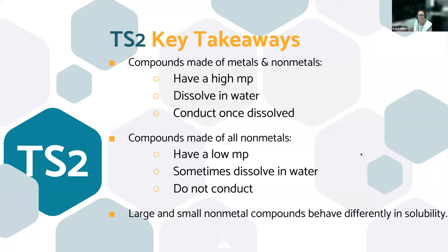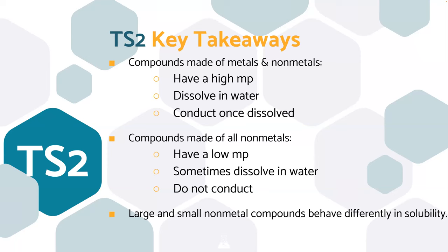Our takeaways for Task Set 2: compounds made of metals and non-metals are ionic — high melting point, dissolve in water, and conduct once dissolved. A high melting point means the substance is still solid after 30 seconds in a Bunsen burner. Compounds made of all non-metals liquefy within 30 seconds — low melting point — and never conduct, though they sometimes dissolve depending on size. Large and small non-metal compounds behave differently with solubility.